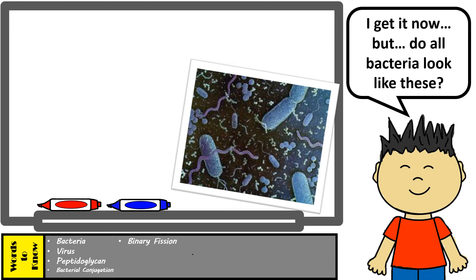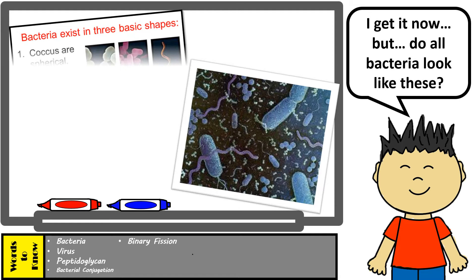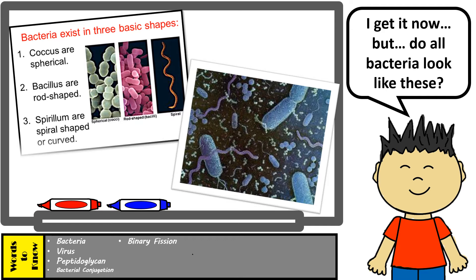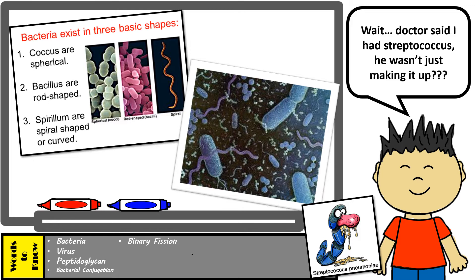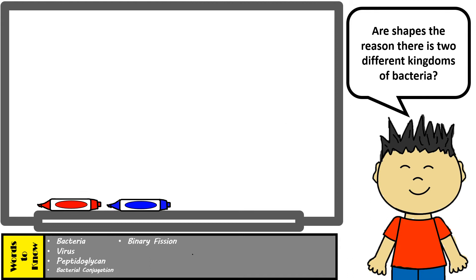Bacteria come in different shapes. The three main shapes you must know are those of spherical shape, which have a suffix known as coccus, the rod shape, which have a suffix known as bacillus. The suffix coccus is referring to the shape of the bacteria.